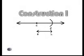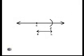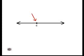Construction number one: copying a segment. This is how to construct a segment congruent to the given segment AB. Using a straight edge, draw a line. Choose any point on the line and label it C. With a compass at point C, construct an arc that intersects the line at point D.